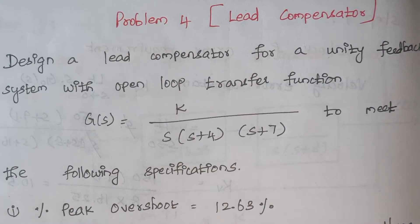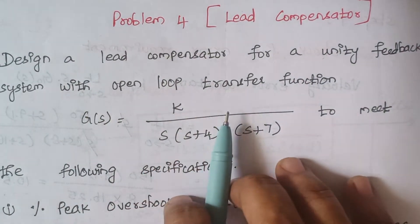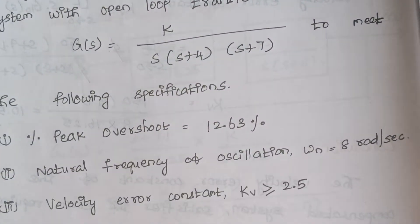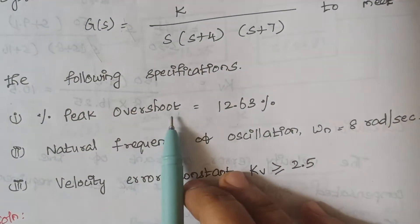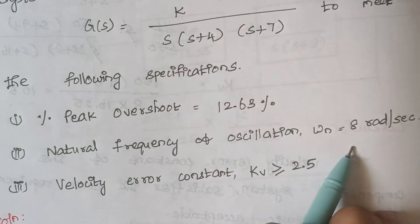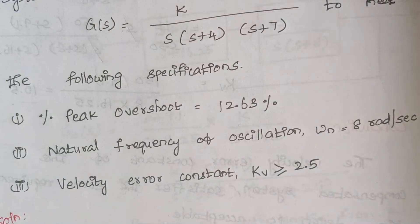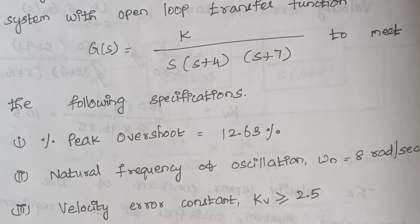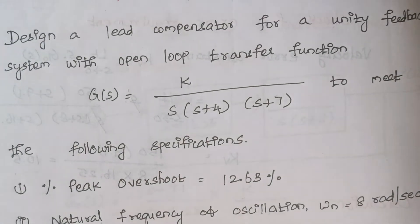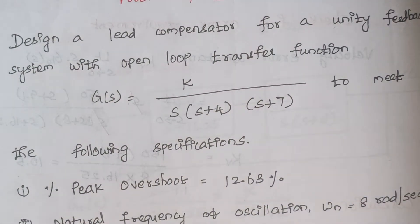The problem is: design a lead compensator for a unity feedback system with open loop transfer function to meet the following specifications. Percentage peak overshoot is 12.63, natural frequency of oscillation is 8 radian per second, and velocity error constant should be greater than or equal to 2.5. We have to design a lead compensator that meets all three specifications.